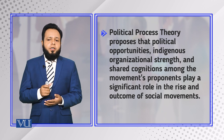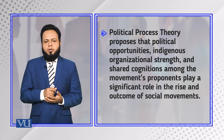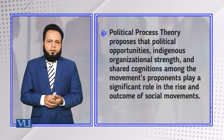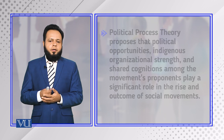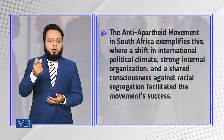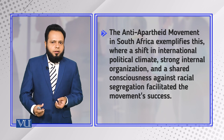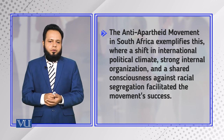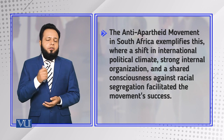Then we have the political process theory, which proposes that political opportunities, indigenous organizational strengths, and shared cognitions among a movement's proponents play a significant role in the rise and outcome of a social movement. Movements backed by political powers can also become successful. For example, the anti-apartheid movement in South Africa benefited from a shift in the international political climate, strong internal organization, and shared consciousness against racial segregation, all of which facilitated that movement's success.